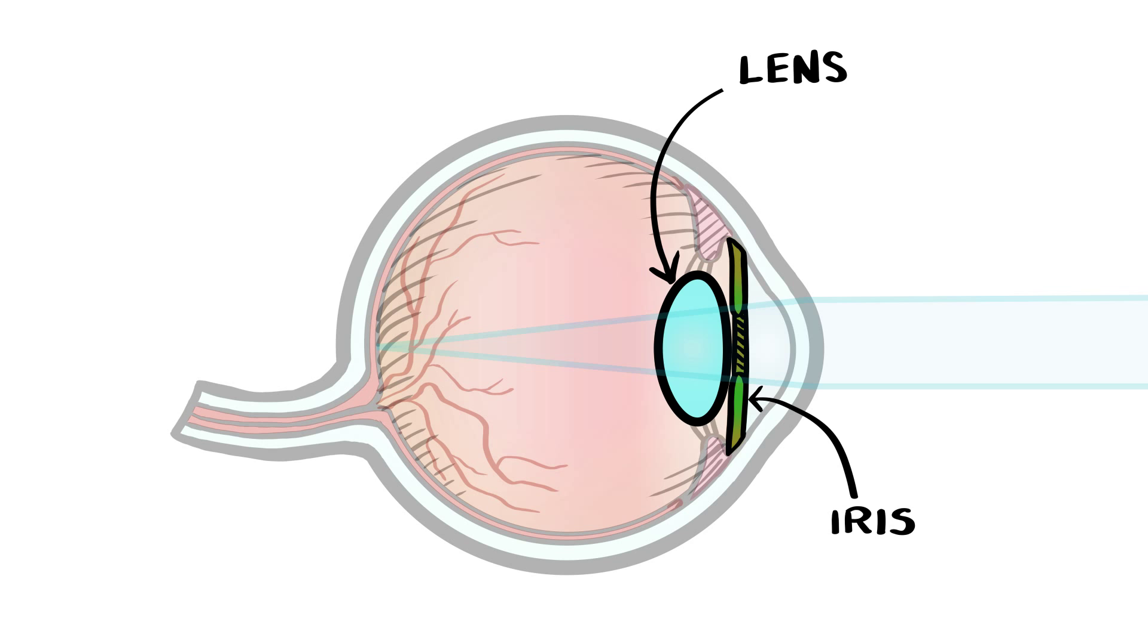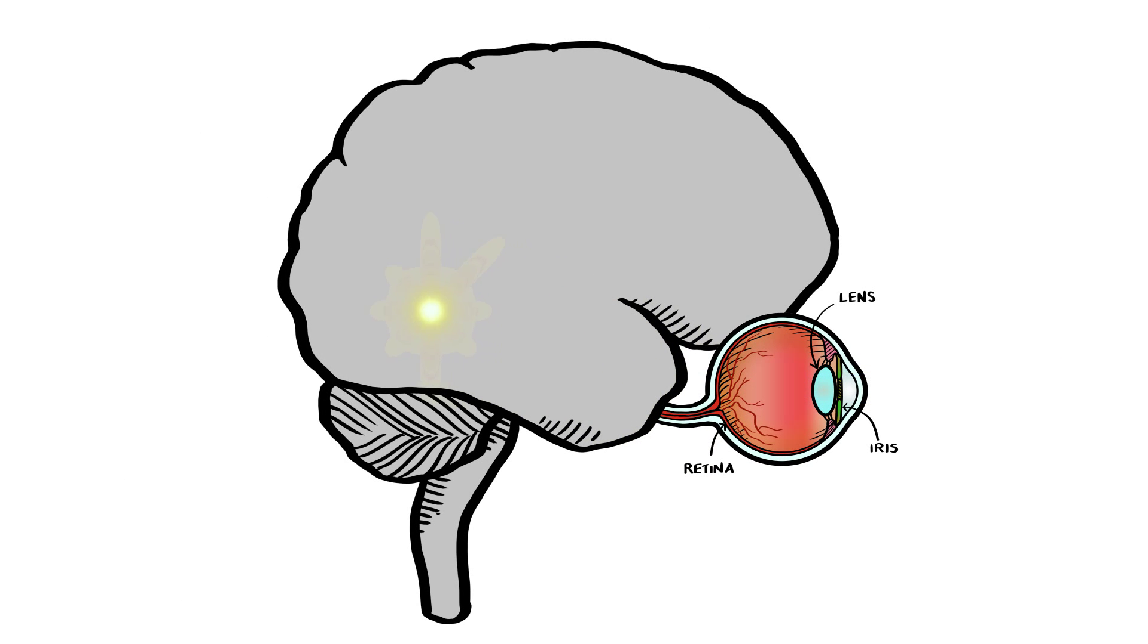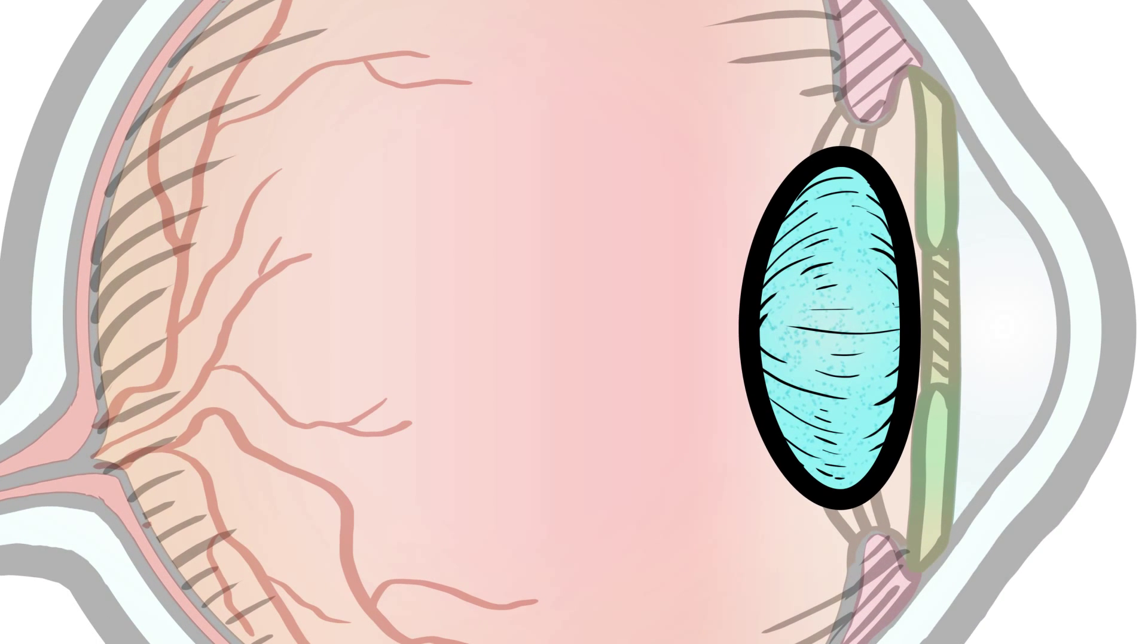The purpose of the lens is to focus light onto the retina which, with the help of our brain, allows us to interpret signals of light into something recognizable. The lens is made primarily of water and proteins, and throughout most of our life it remains clear and allows light to pass through just fine.